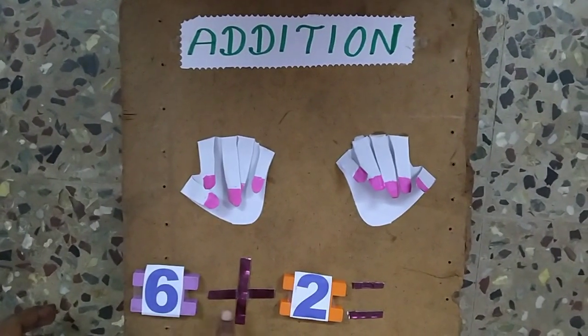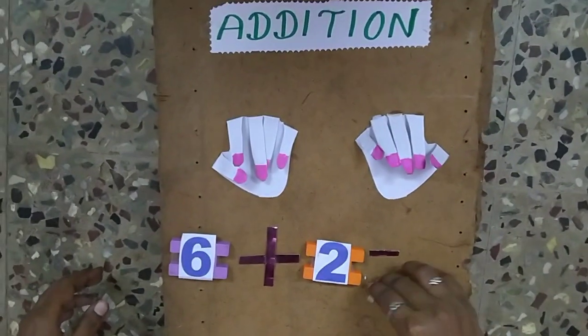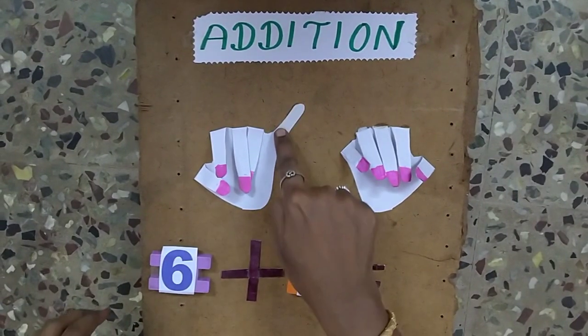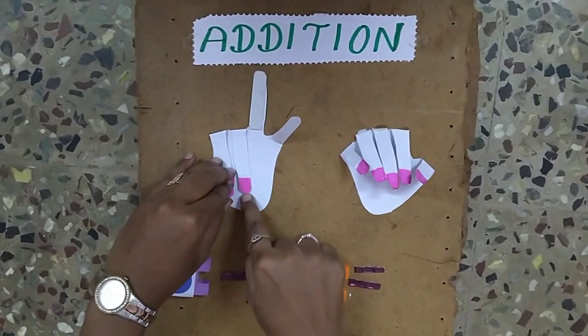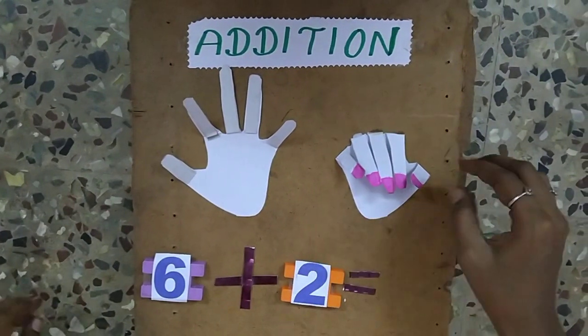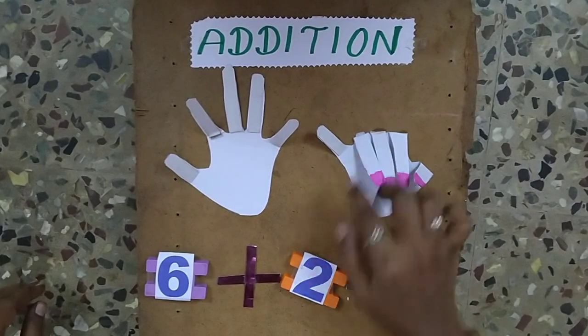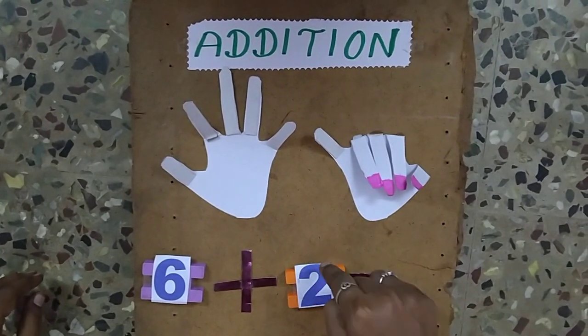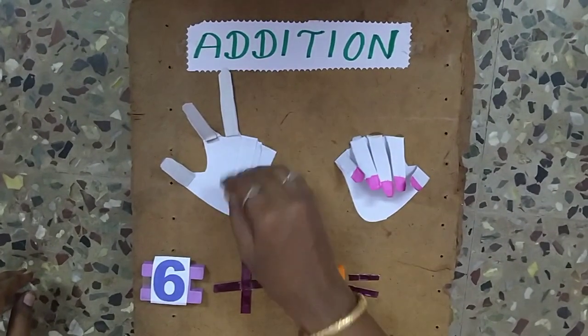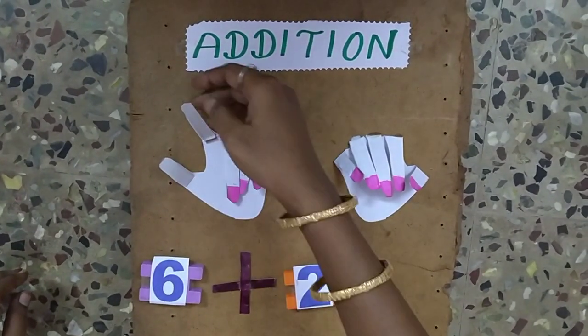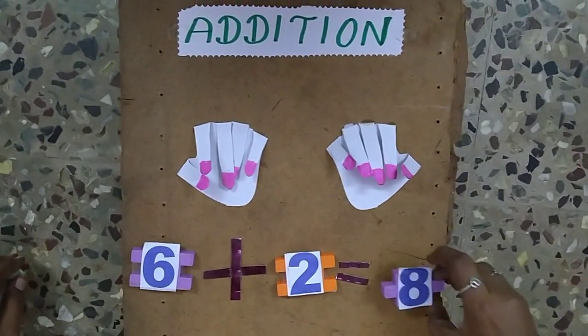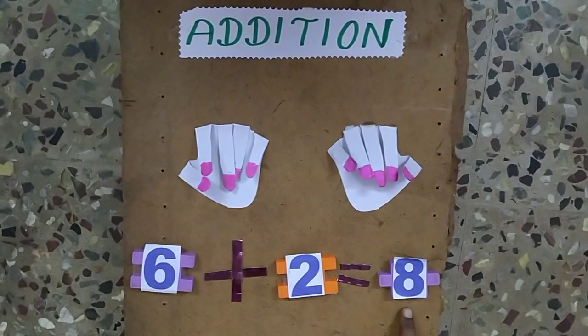Next sum is 6 plus 2 equals what? First number is 6, so I take 6 fingers: 1, 2, 3, 4, 5, 6. Plus 2, so I continue counting: 7, 8. The answer is 8. 6 plus 2 equals 8.